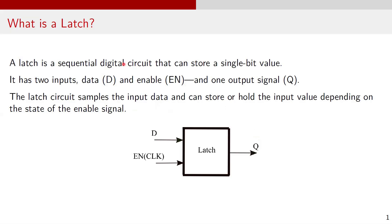A latch is a sequential digital circuit that can store a single bit value. It has two inputs, data and enable, and one output signal Q. Here is the interface block diagram of a latch. D represents the data input, EN is the enable input, and Q is the output signal.